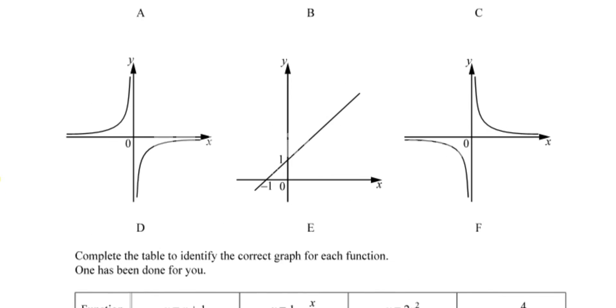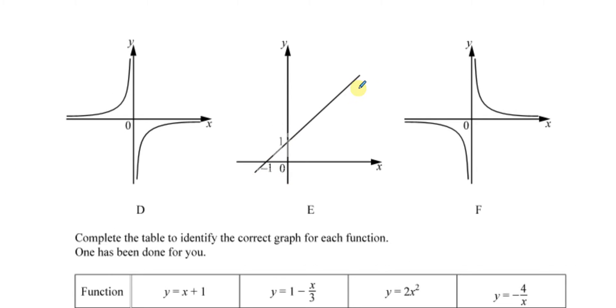y = x + 1 is E. You can see that it's a straight line, it's a linear graph. It goes through 1 on the y-axis, so the y-intercept is 1. It has a positive gradient of 1, so that's pretty clear.